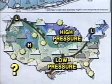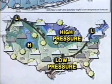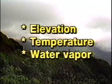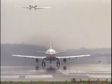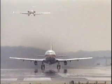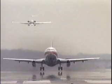What causes an air mass to be high pressure or low? Air pressure is determined by three main factors: elevation, temperature, and water vapor. As elevation increases, there is less air pressure, because the higher we go, the less atmosphere exists above us.